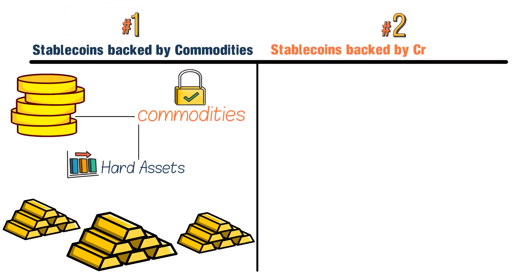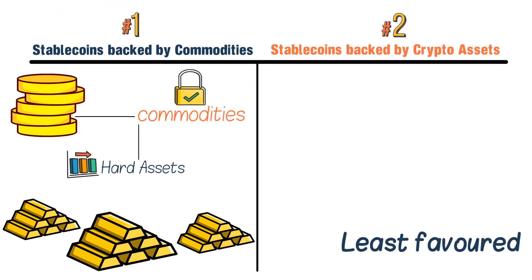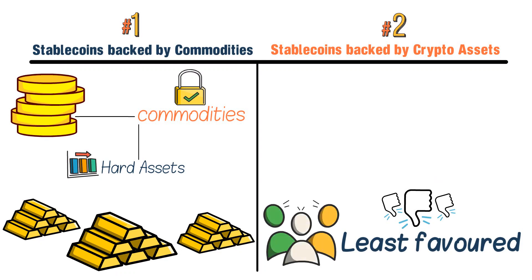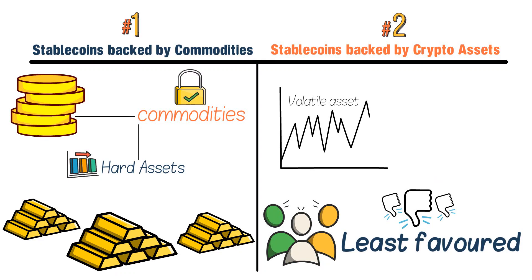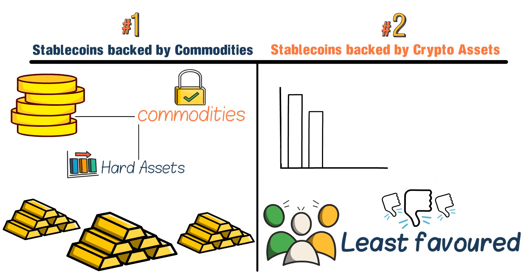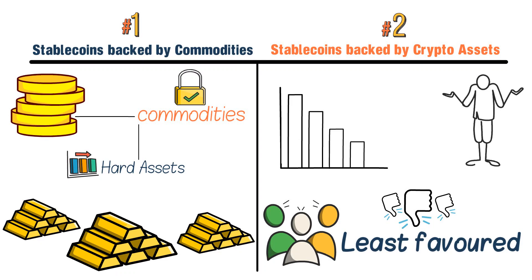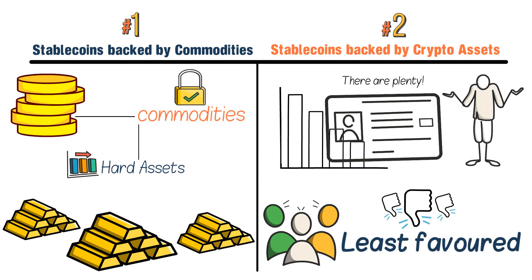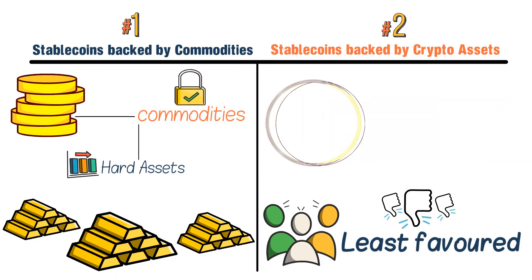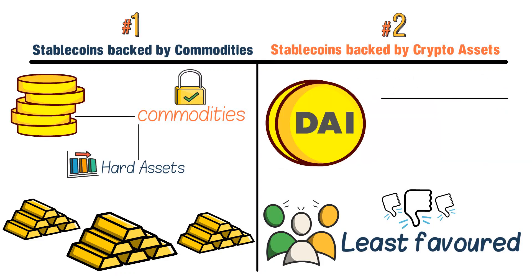Number two: stablecoins backed by crypto assets. This category is often the least favored in the crypto space, because it is secured with a volatile asset, which defeats the point of a stablecoin. However, there are plenty that exist and can be used within a portfolio. A commonly known stablecoin in this space is DAI, which is backed by the Ethereum cryptocurrency and is therefore open to volatility.